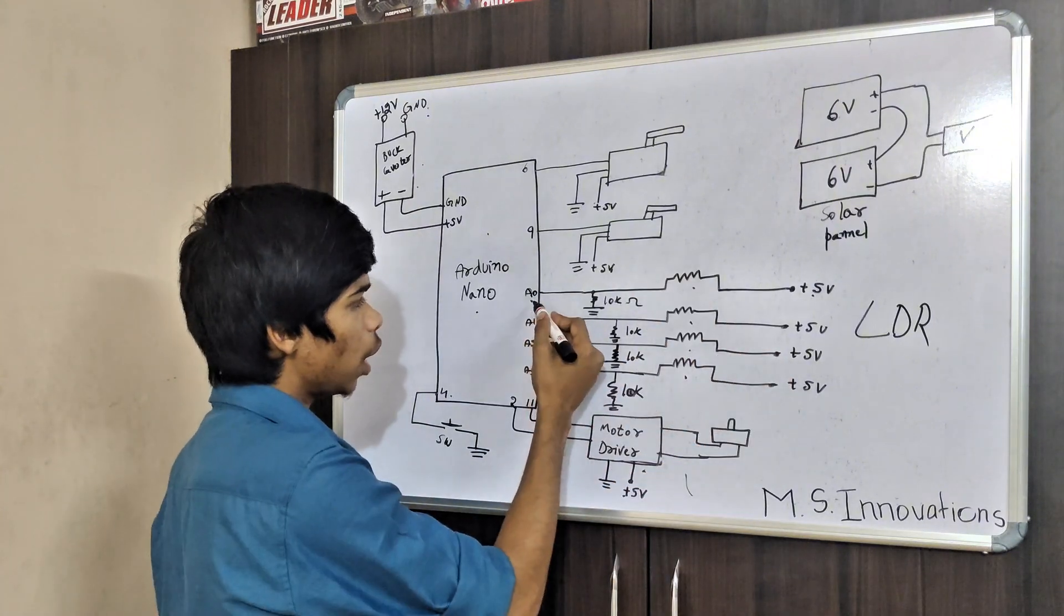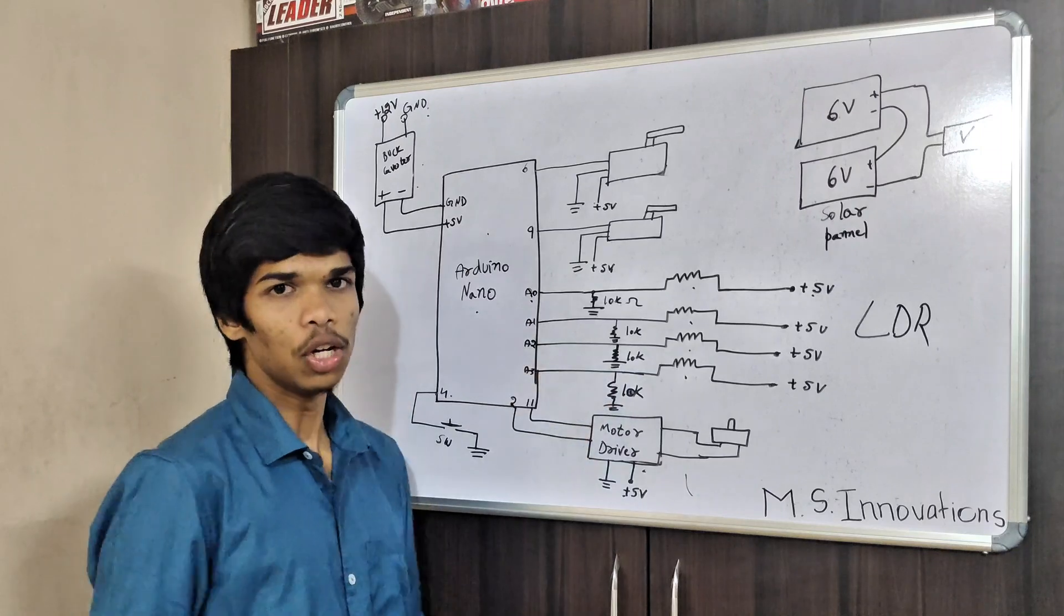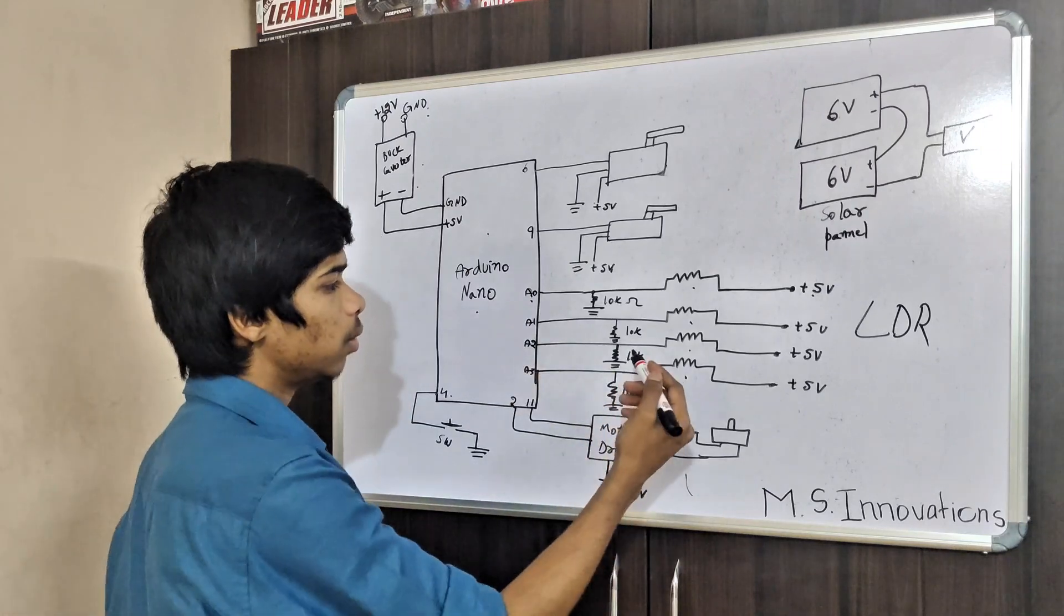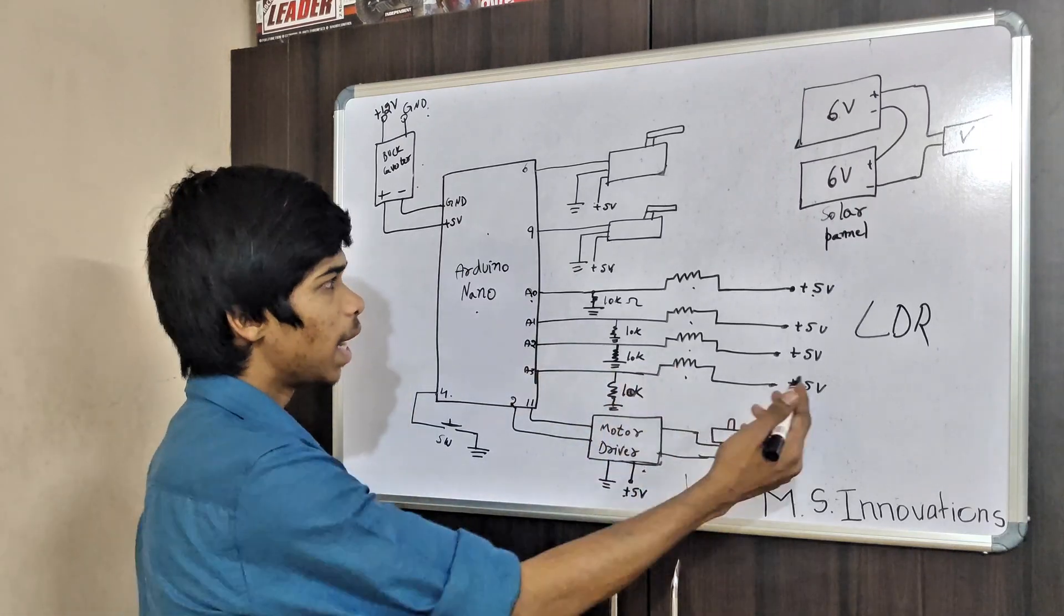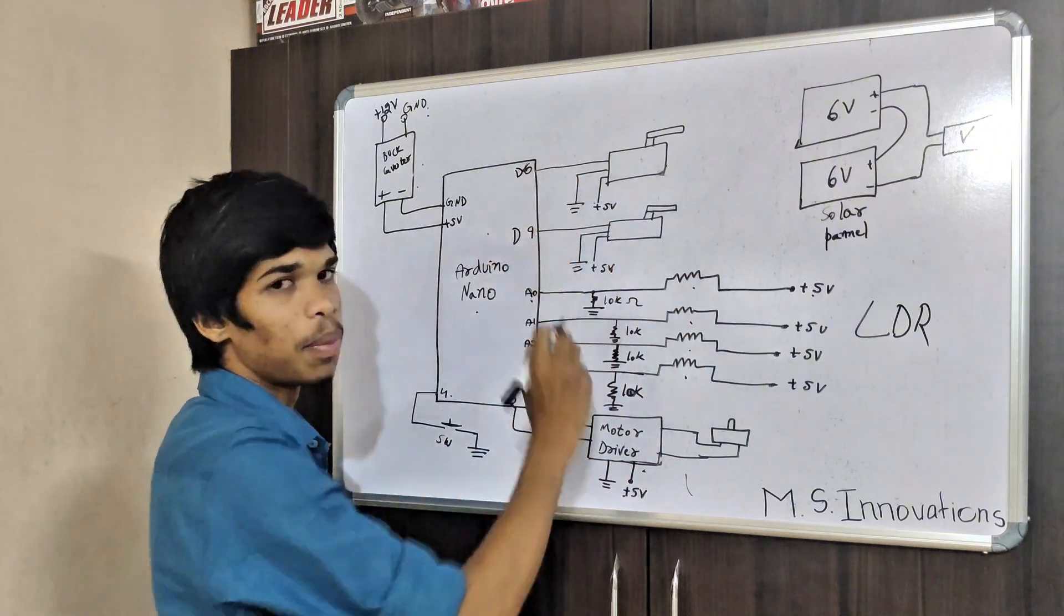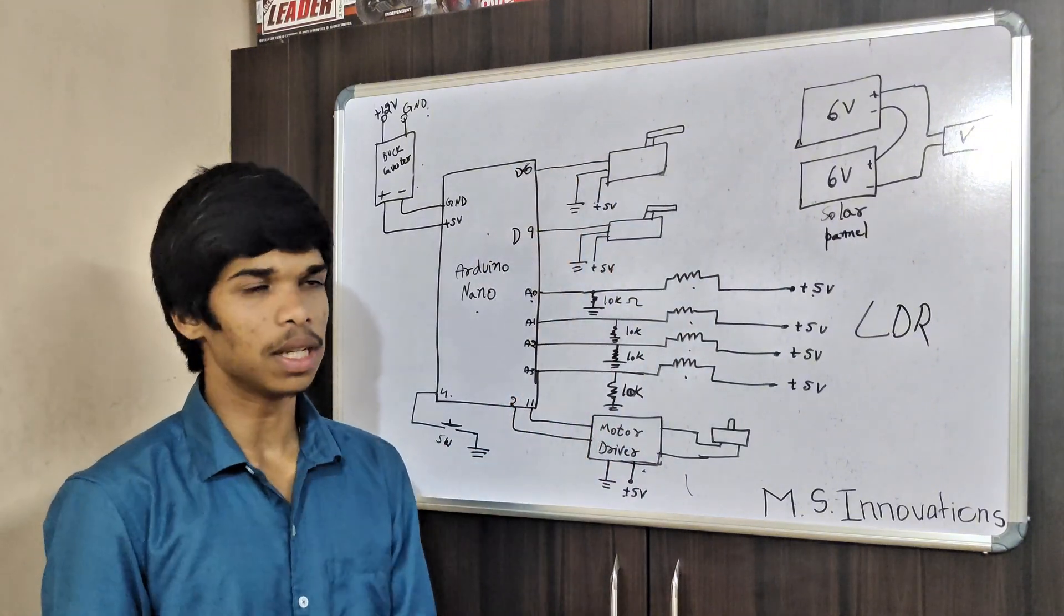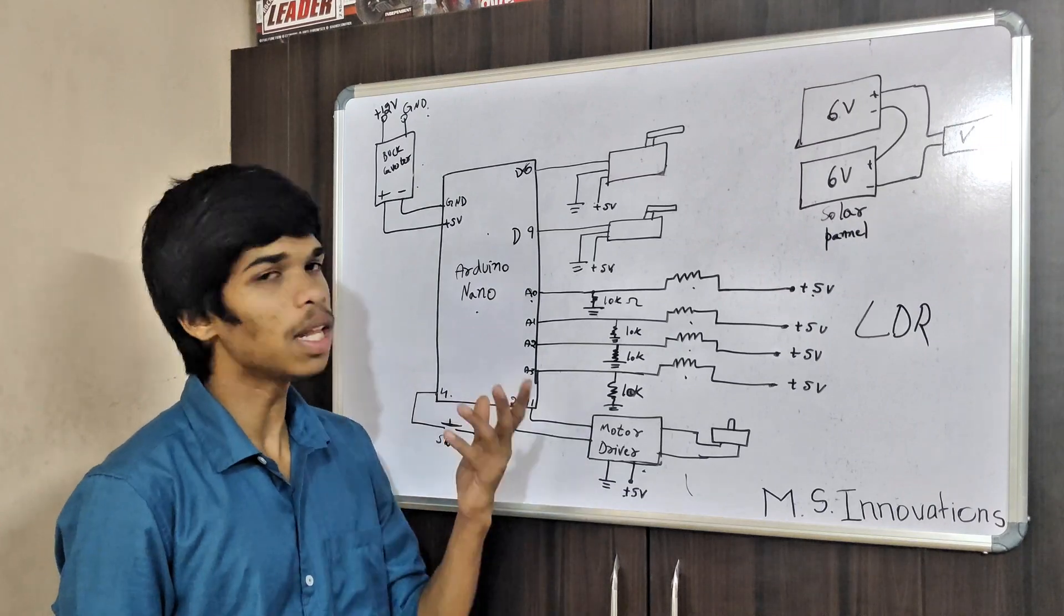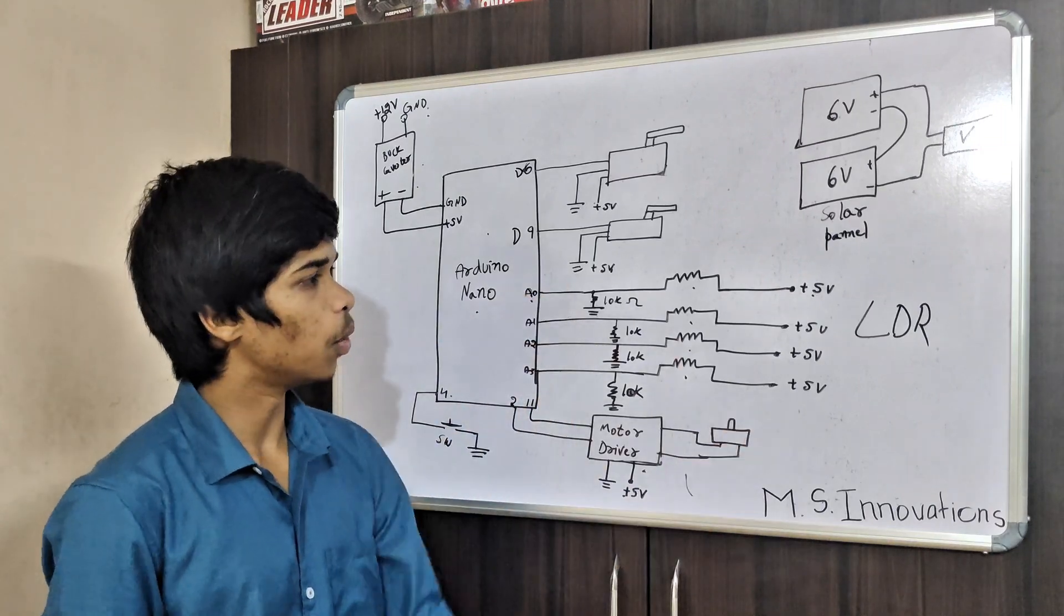There is the same connection: A0, A1, A2, A3. Total four analog inputs we are getting from LDR sensors. Servo motors are connected to digital pin 6 and digital pin 9, which are PWM signals. Through PWM signals only we can control servo motors.